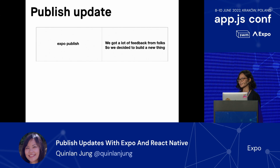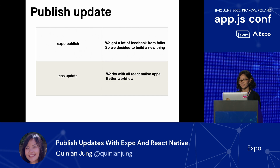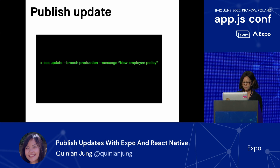So I'm going to go over how to do that with the update tools that we made. Several years ago, we made a tool called Expo Publish, and we got a lot of feedback over the years, so we decided to build a new thing. The new thing we built is called EAS Update, and the main difference is that EAS Update works with all React Native apps. There's also a better, more ergonomic workflow. You open up your command line and run the EAS Update command.